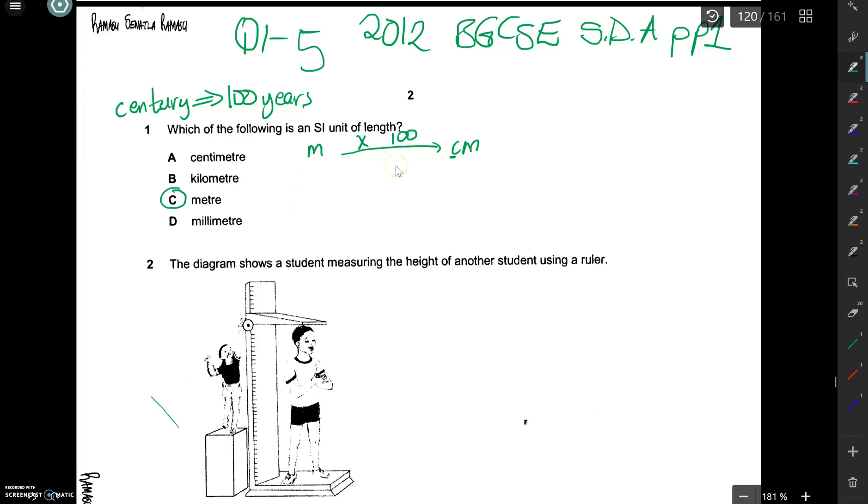So centi means 100. And to change from centimeters to meters, you divide by 100 again. And to change meters to kilometers, you divide your meters by 1000. Because kilo, K, means 1000. And to convert your kilometers to meters, you multiply by 1000.